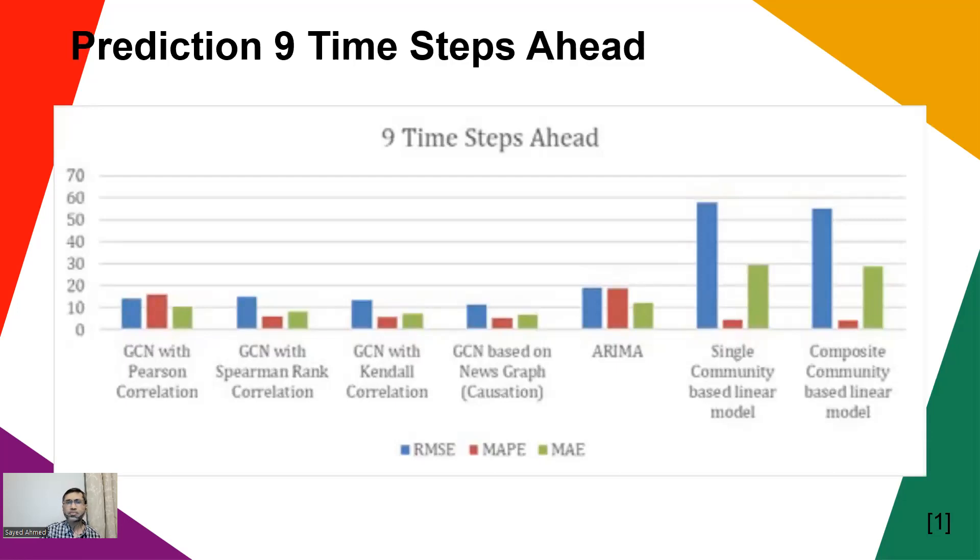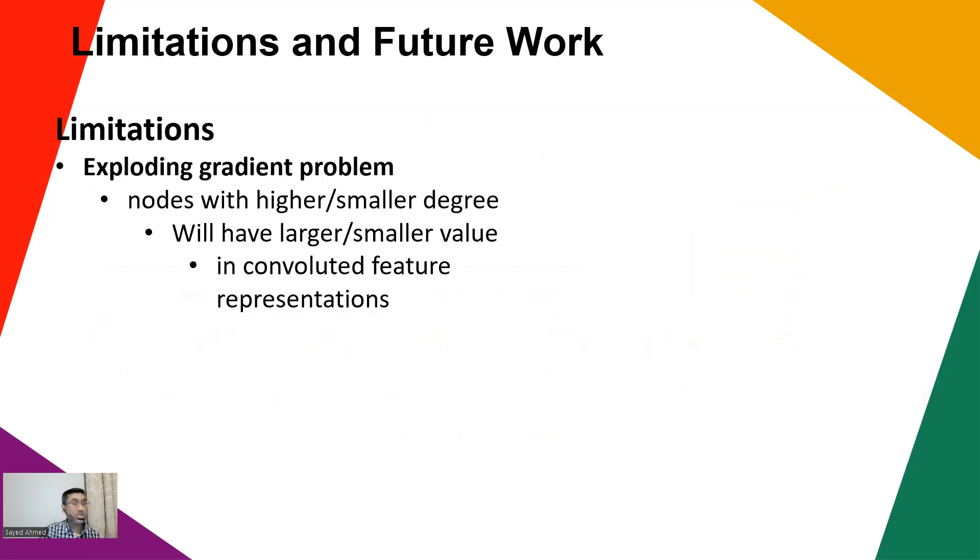Now what is the limitation of their work? In terms of limitations, their approach may suffer from exploding gradient problem. What does it mean? The nodes with higher degree will get larger values in the convolutional feature representations, and lower degree nodes will get lower values, and gradients accumulate or vanish, so that can affect the performance.